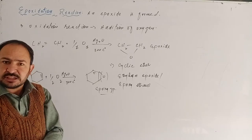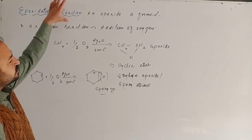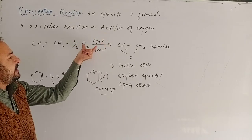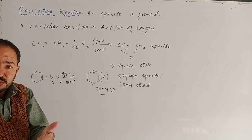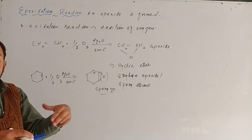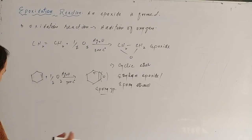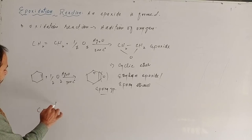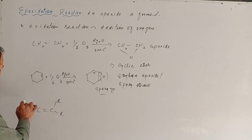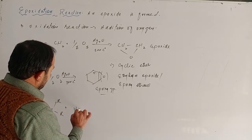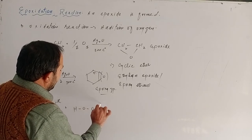This reaction is known as epoxidation. The epoxidation reaction can be carried out using silver oxide, and another reagent used is peracetic acid. This reaction is called peracetic acid epoxidation.